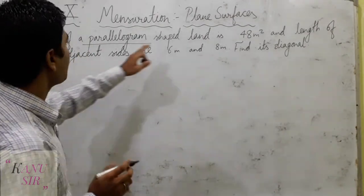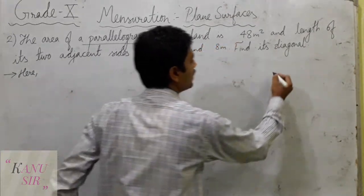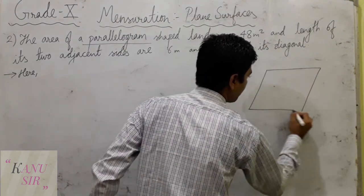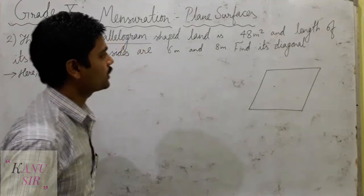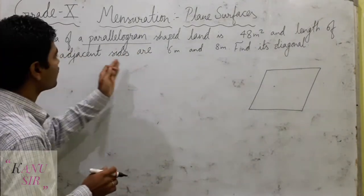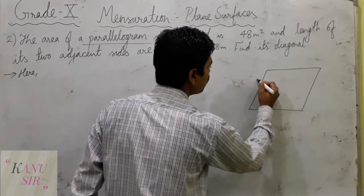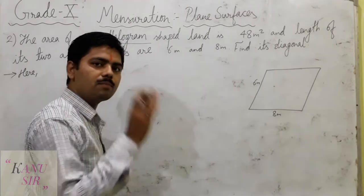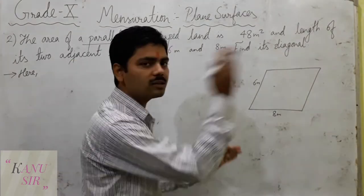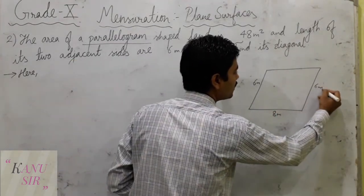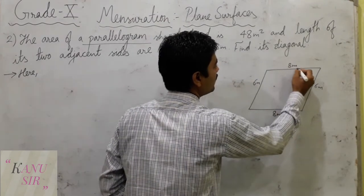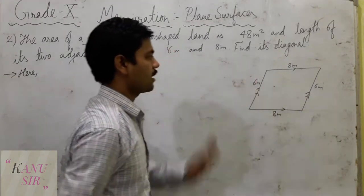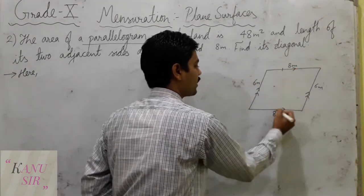Let us see the question. The area of a parallelogram is 48 square meters. The length of two adjacent sides are 6 meters and 8 meters respectively. Because it is a parallelogram, the opposite sides are also equal — so the other two sides are also 6 meters and 8 meters. Opposite sides are parallel as well as equal.